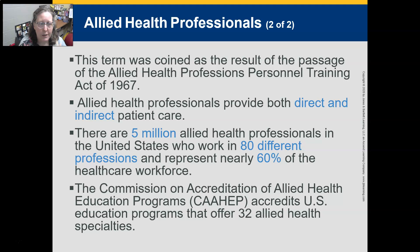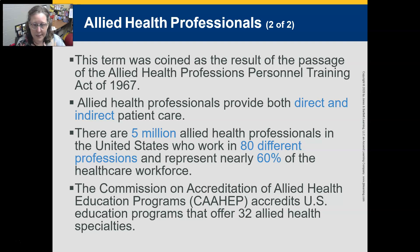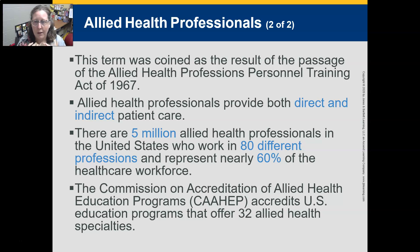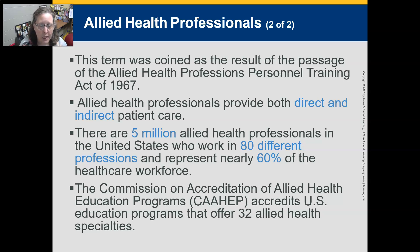Allied Health Professionals provide both direct and indirect patient care. Allied Health Professionals like myself that work in the lab — I am a medical laboratory scientist — provide a lot of indirect patient care. We are behind the scenes running all the labs and testing so that physicians and nurses can properly take care of their patients. There are 5 million Allied Health Professionals in the United States who work in 80 different professions and represent nearly 60% of the healthcare workforce. The Commission on Accreditation of Allied Health Education Programs accredits U.S. education programs that offer 32 Allied Health Specialties.